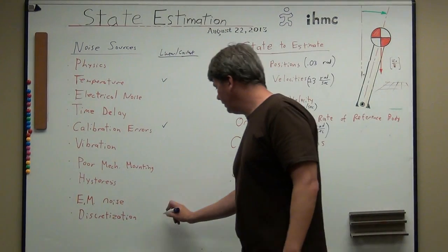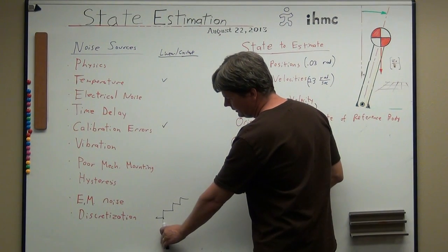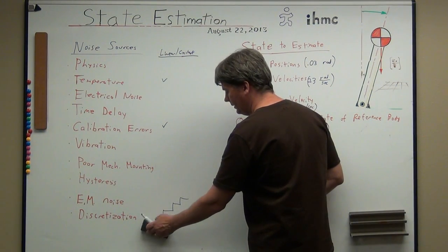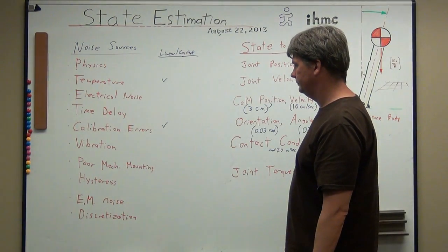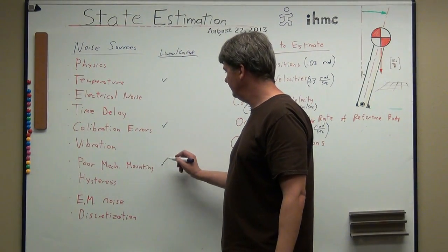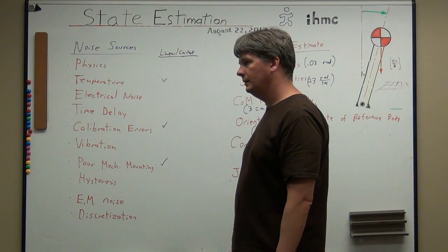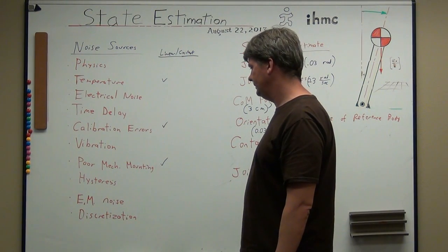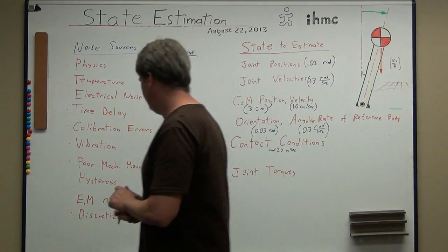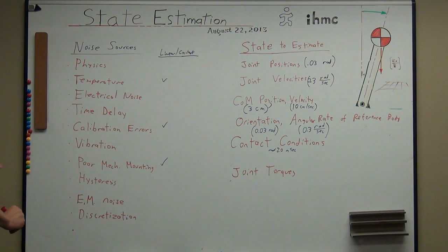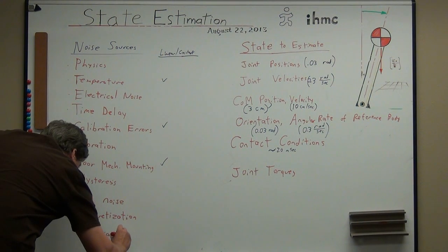Discretization is a lot like noise or like delay — as you're moving along, you don't notice that something happened until it does. Delay is definitely non-linear. In general, we're limiting everything to very specific instances in order to make it linear. You can just lump everything you don't understand into some sort of Gaussian noise source.